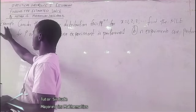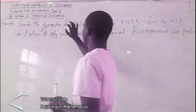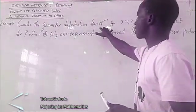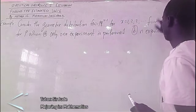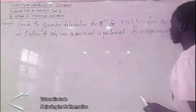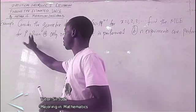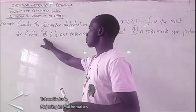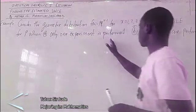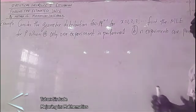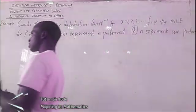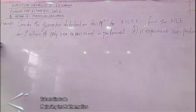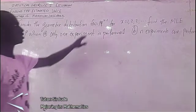So now for example, this question: consider the geometric distribution, f(x) equal to this, for x equal to 1, 2, 3... Find the maximum likelihood estimator for p when (a) only one experiment is performed, and (b) n experiments are performed. The first step you have to know is that you have to state your distribution function, though you have been given this already.